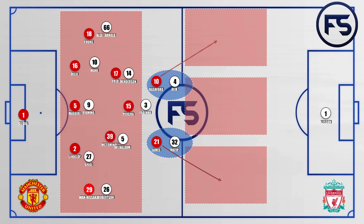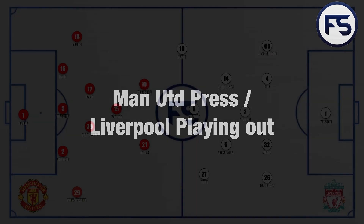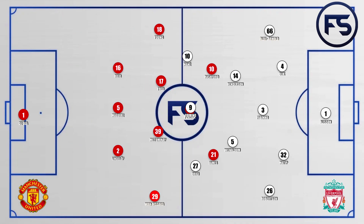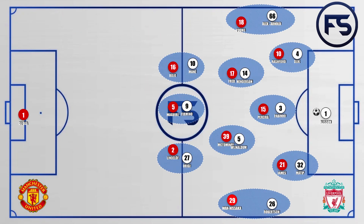This worked until the second half when Liverpool changed system and were able to get their fullbacks high up the pitch, and it took Manchester United a while to adapt. Let's look at Manchester United's press and Liverpool playing out from the back.